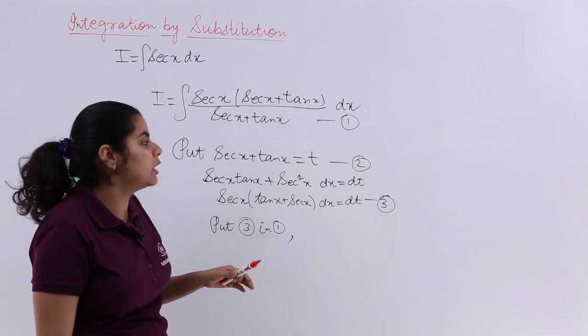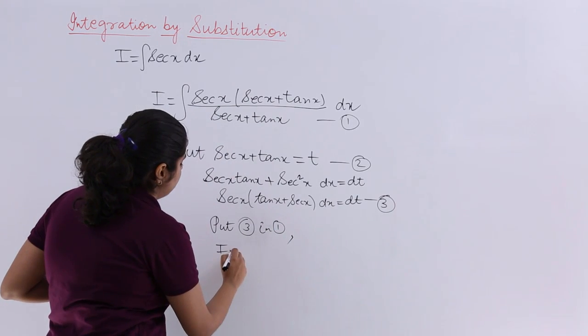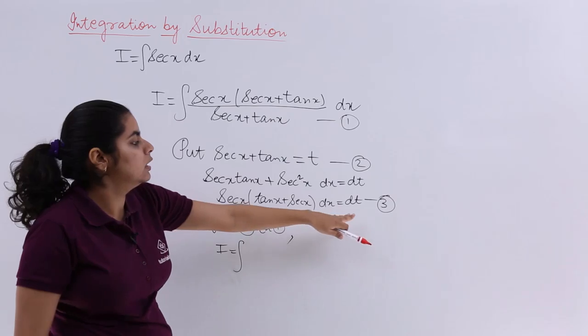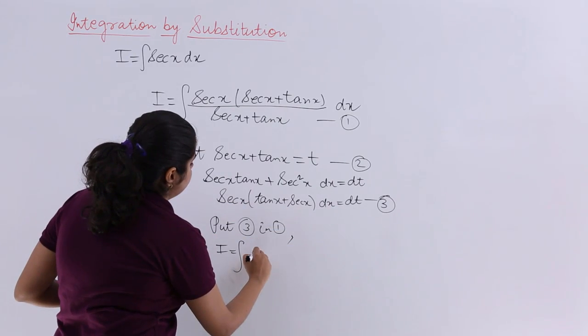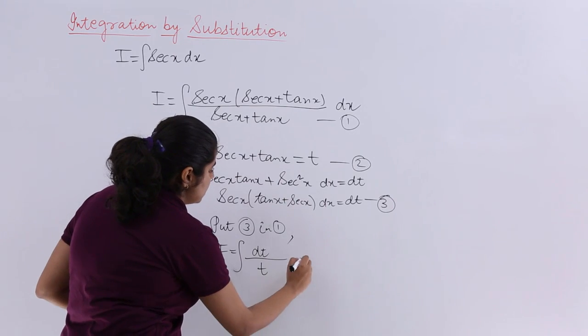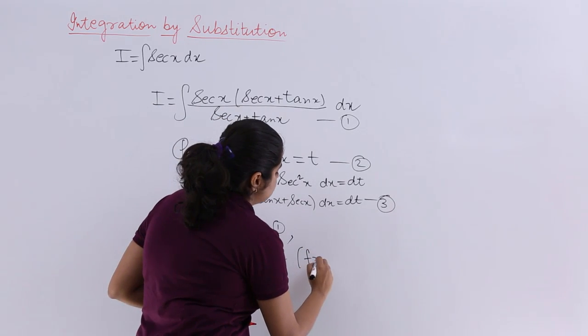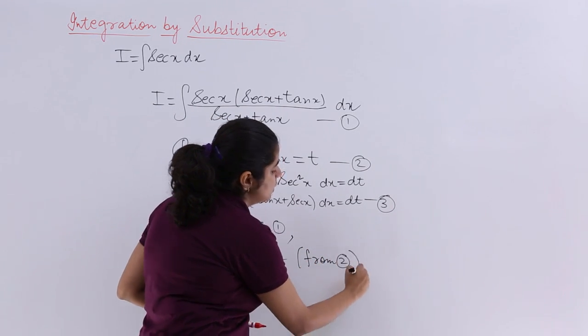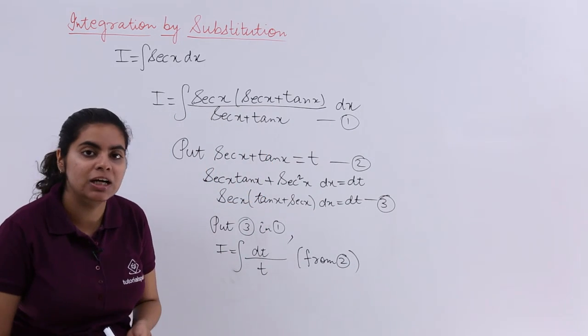And so it becomes I equals integral of dt over sec(x) plus tan(x), which is t. It is basically from equation 2 also. Not only have I used equation number 3 but also equation number 2.